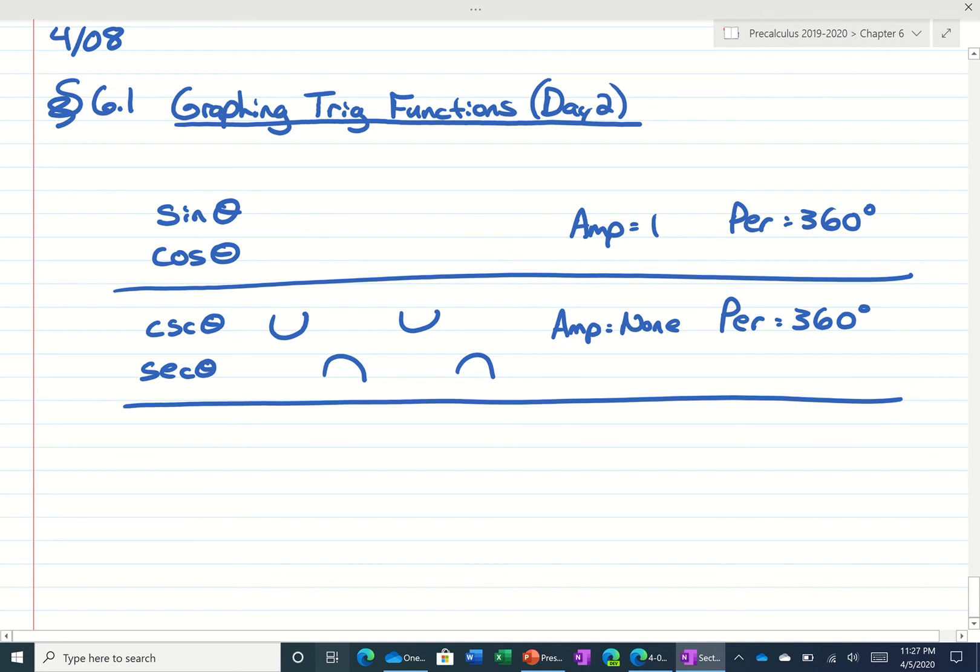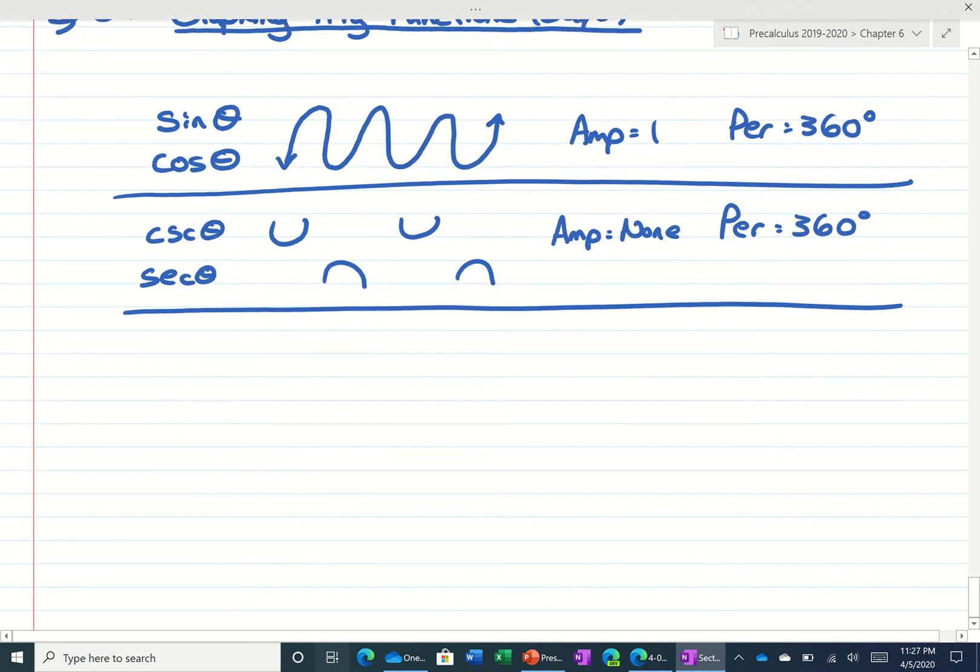And then we know that the graph of tangent and cotangent, well tangent looks like a normal cubic like this, cotangent's cubic goes the other way, it's like you reflected them over the x-axis. I want you to tell me that the amplitude's none here and that the period for these is 180 degrees.